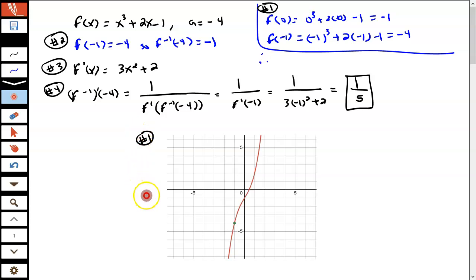The other way you could have done it is going to Desmos (D-E-S-M-O-S dot com) and use a graphing calculator to plot the function. And you see right here that when x is negative 1, the value of the function is negative 4.